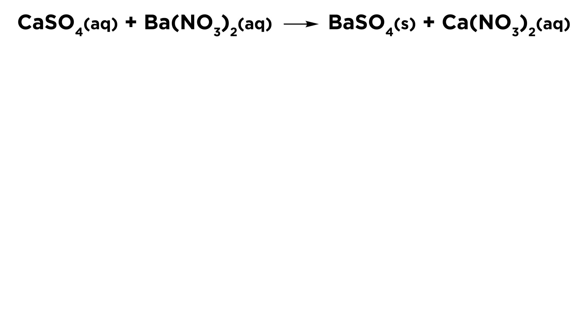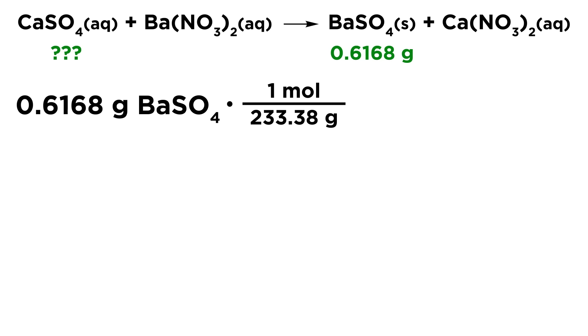So up top, let's put this equation and then let's put our information. So we know that we got 0.6168 grams of a barium sulfate precipitate. So we were able to get that precipitate, remove it from solution, find the mass, and we got that mass of the precipitate. And we want to use that information to figure out, first of all, what mass of calcium sulfate had to react in order to generate that much barium sulfate precipitate. So let's do some stoichiometry here.